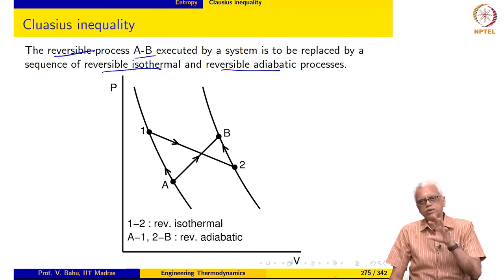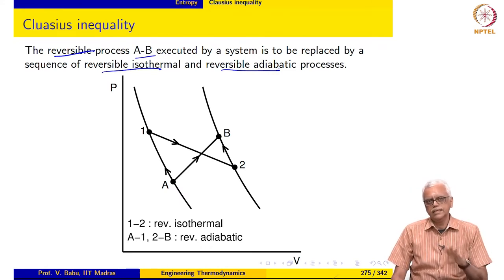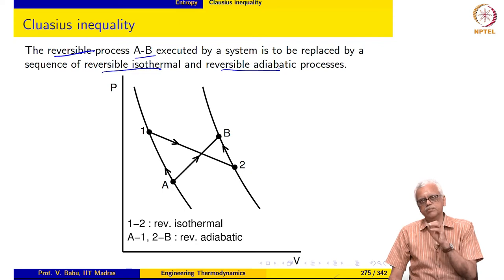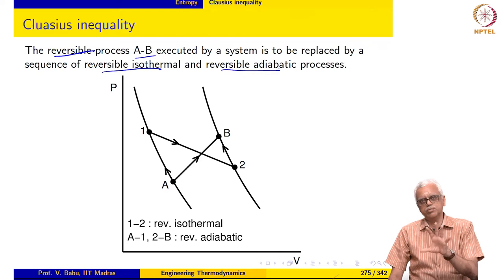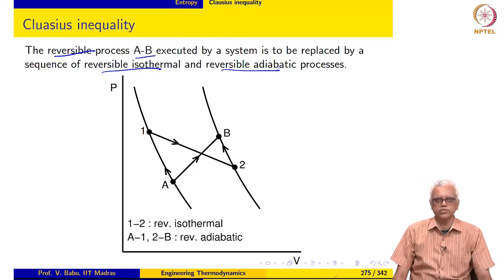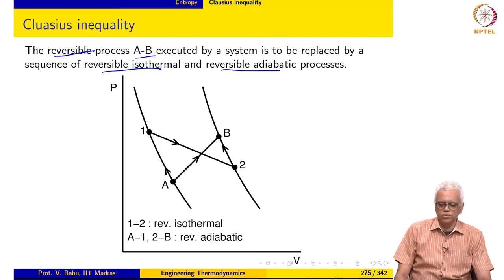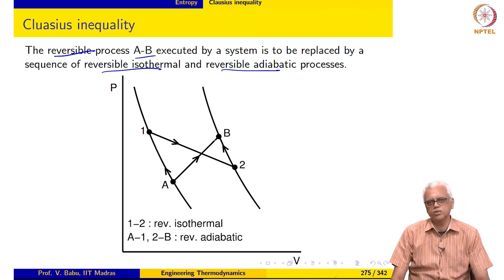These two processes play a very special role in thermodynamics, especially in connection with the second law. They are very much preferred because many of the expressions we develop simplify tremendously when applied to reversible isothermal and reversible adiabatic processes. So it is always desirable to replace any reversible process with a sequence of reversible isothermal and reversible adiabatic processes.